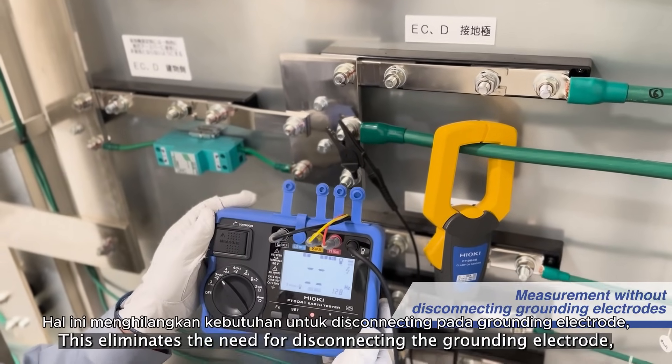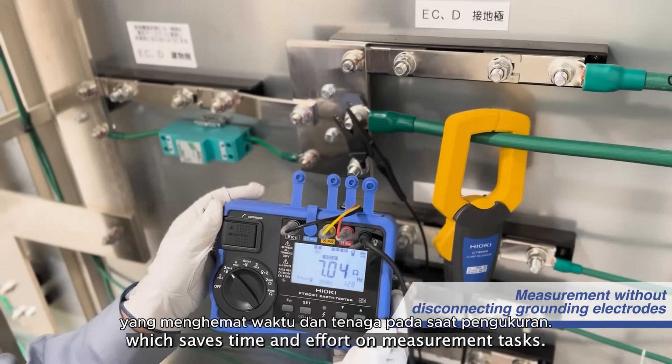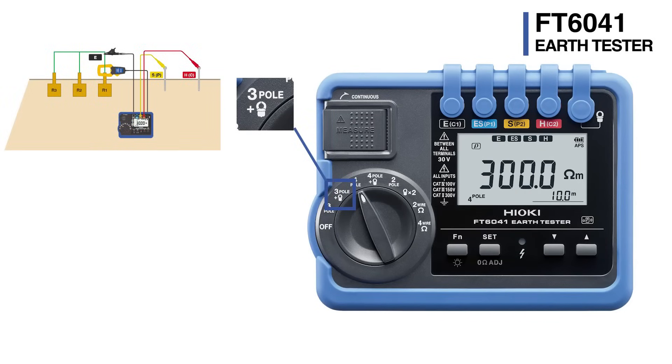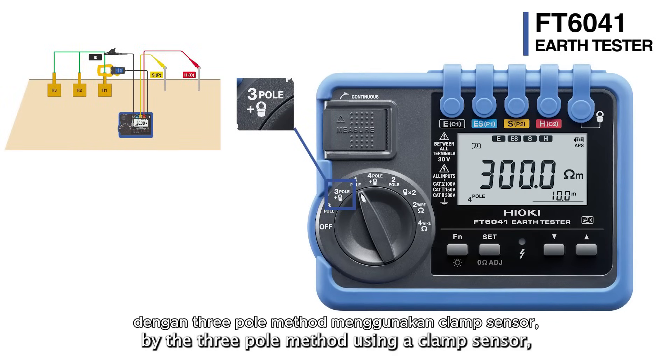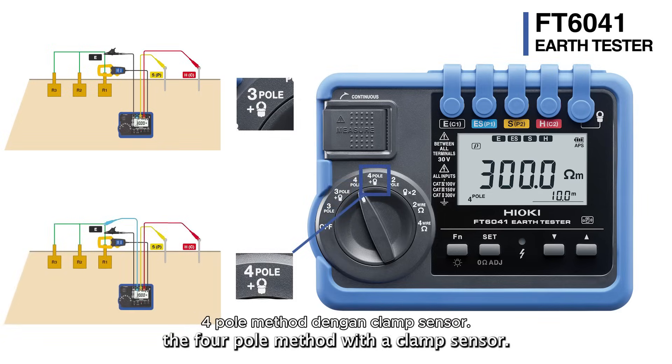The FT6041 supports both ground resistance measurement by the 3-pole method using a clamp sensor, and for more accurate measurement, the 4-pole method with a clamp sensor.